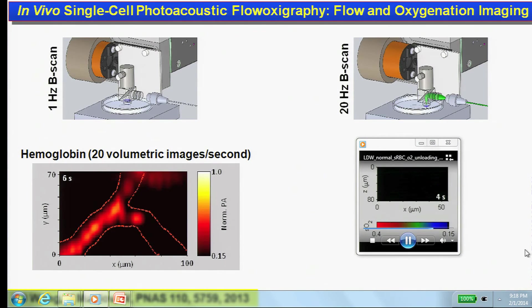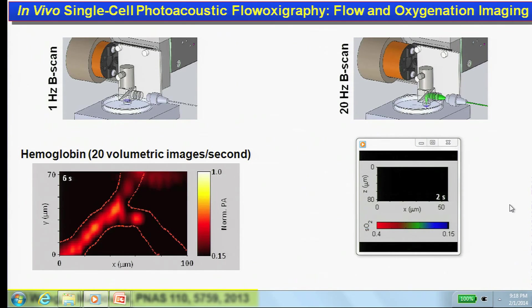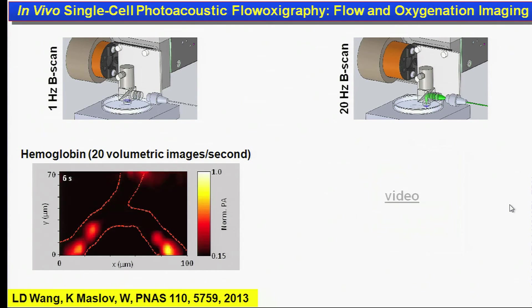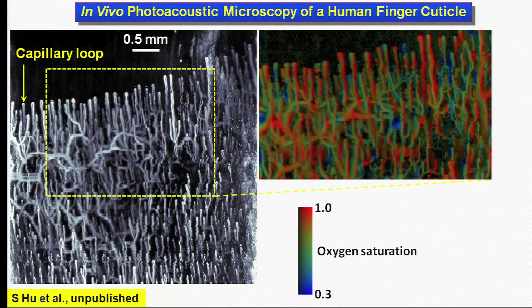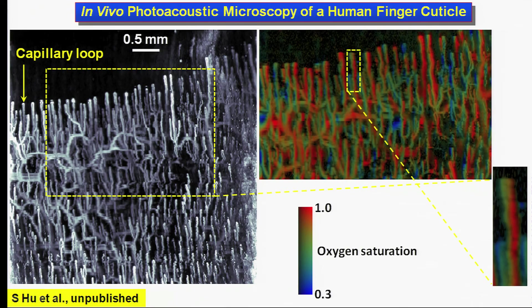This movie shows oxygen release from single red blood cells monitored by photoacoustics on a cell-by-cell basis. Capillaries in a finger cuticle have been imaged in vivo in humans. The steepest gradient of oxygen saturation at the tip of the capillary indicates where most oxygen is released.